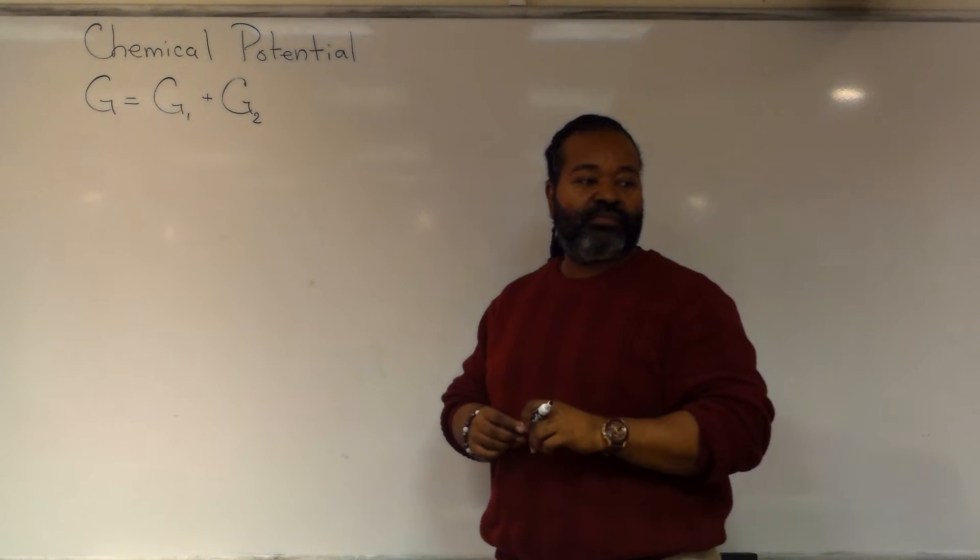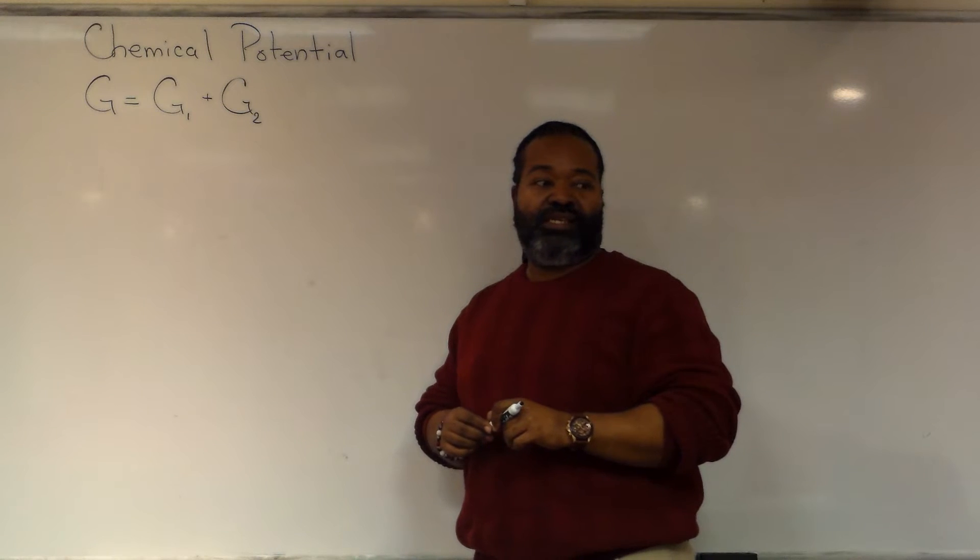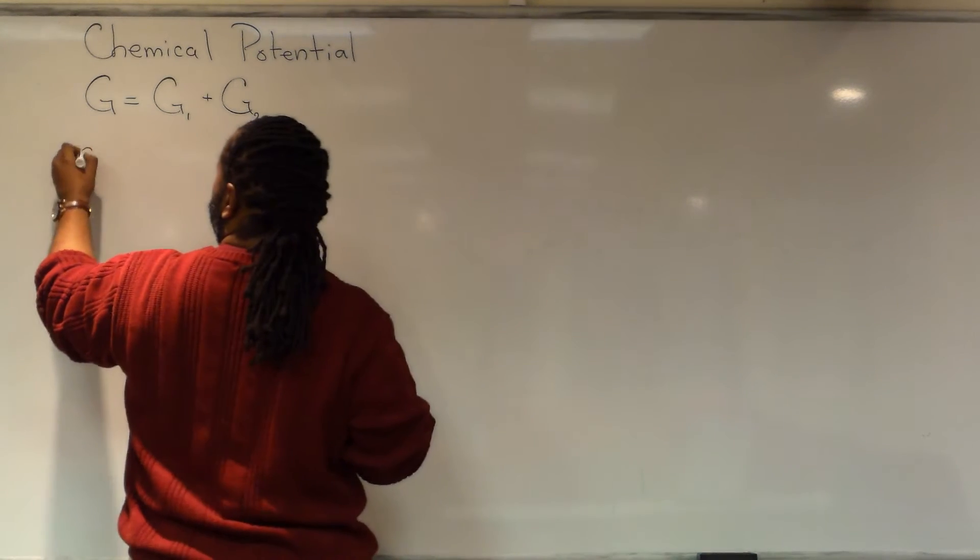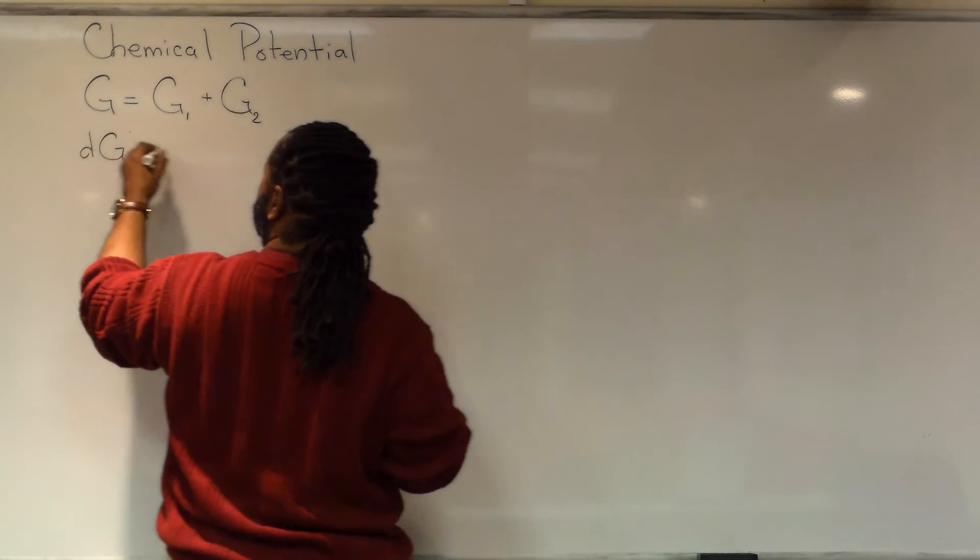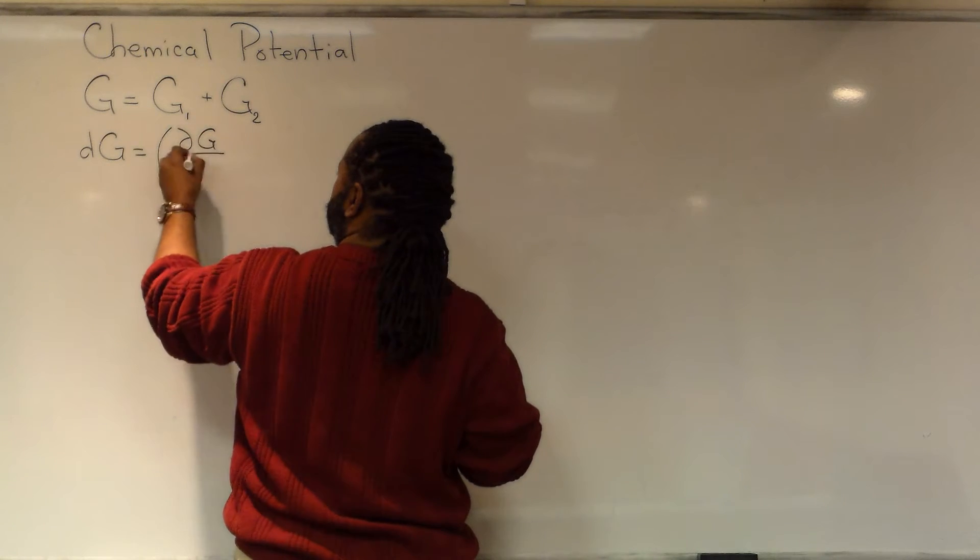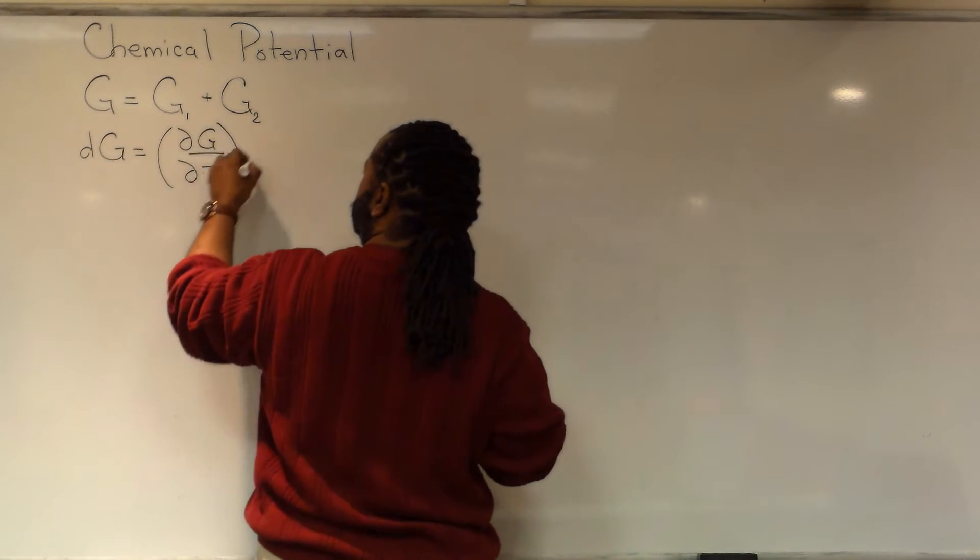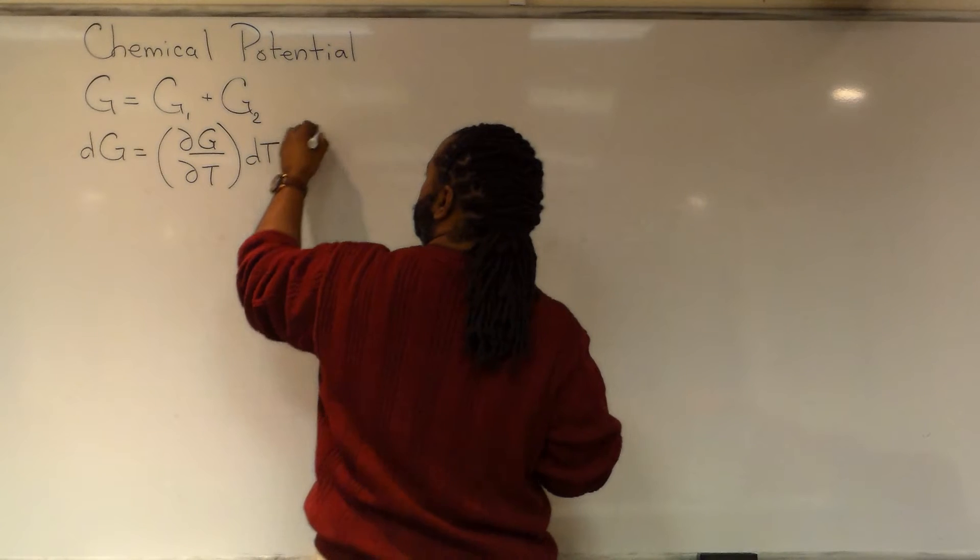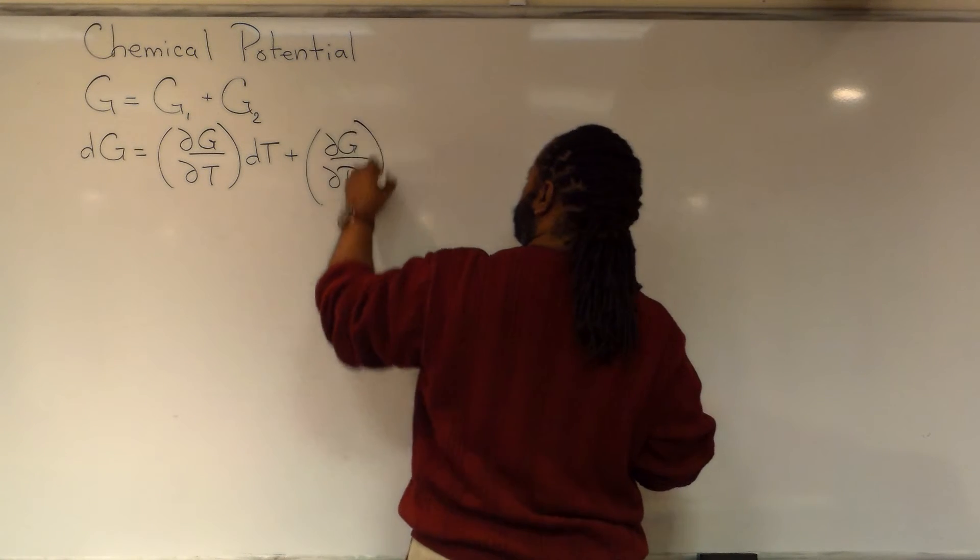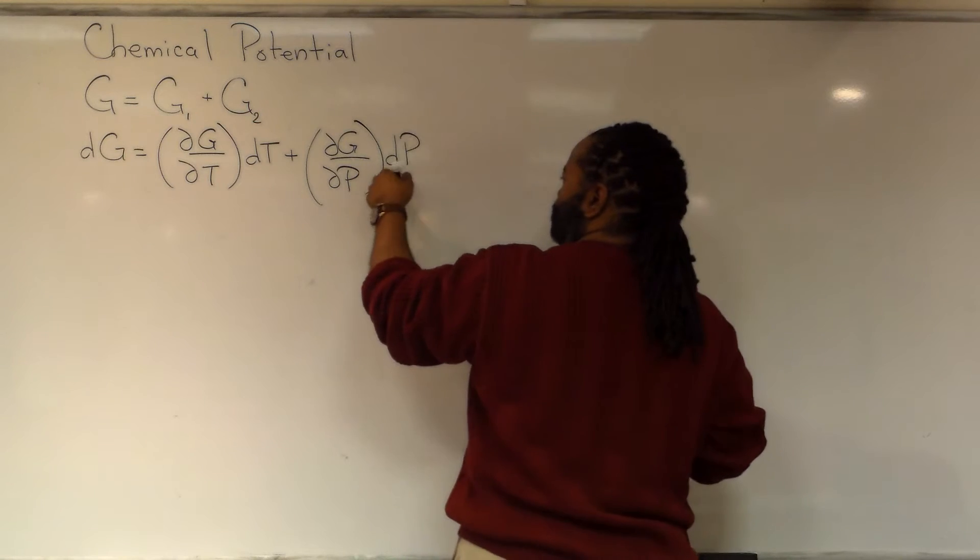Now there's a few things to think about. We can take the differential of this thing. So if we take a total differential, it gives us normally a function of temperature and pressure. So we'll need to get those partials first. So we have the partial with respect to pressure times its differential version.